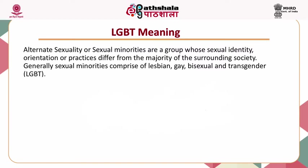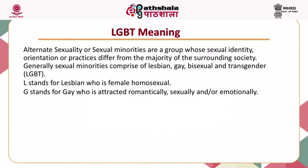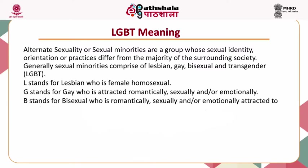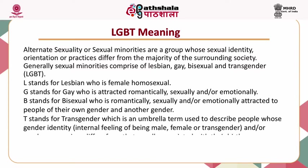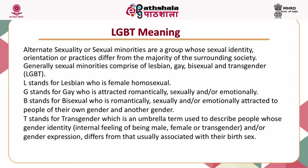Generally, sexual minorities comprise lesbians, gays, bisexuals, and transgenders. L stands for lesbians, who are female homosexuals — a female who experiences romantic love or sexual attraction to other females. The term lesbian is also used to express sexual identity or sexual behavior regardless of sexual orientation, or as an adjective to characterize nouns with female homosexuality or same-sex attractions. G stands for gay — a male who is attracted romantically, sexually, or emotionally to another male.